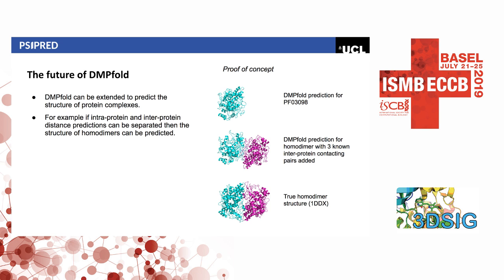For the future, DMPfold can be extended to predict complex structures. For example, if you separate the intra- and inter-protein distance predictions you could predict the structure of homodimers. As a high-level proof of concept, I've taken one Pfam family where we get a reasonably good monomer model, added three known inter-protein contacting pairs from the crystal structure, and put it through the same model generation procedure — you get roughly the right structure and orientation. This is similar to how HADDOCK works, but we could build this into DMPfold, and we have a PhD student working on that now.